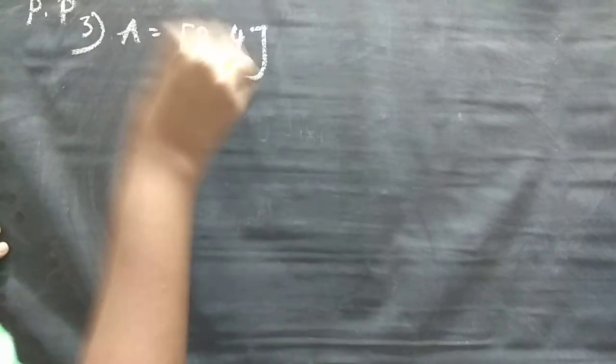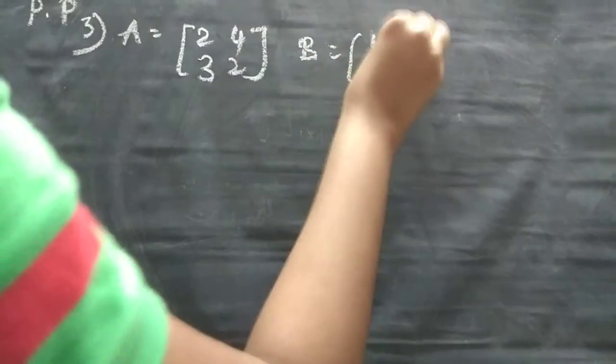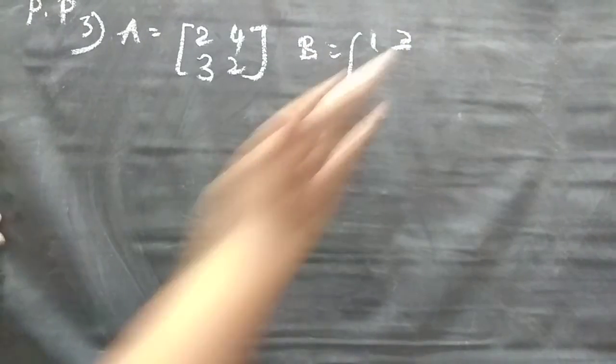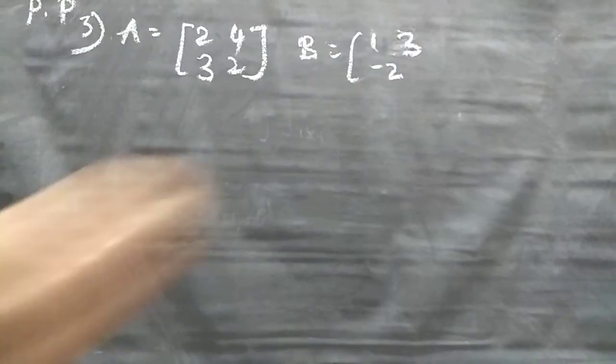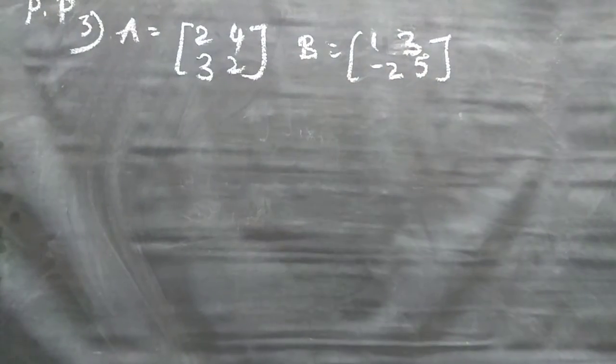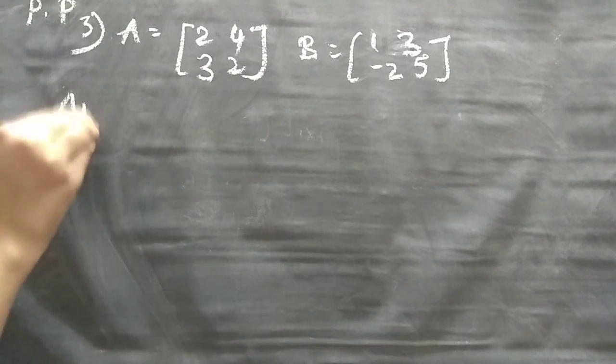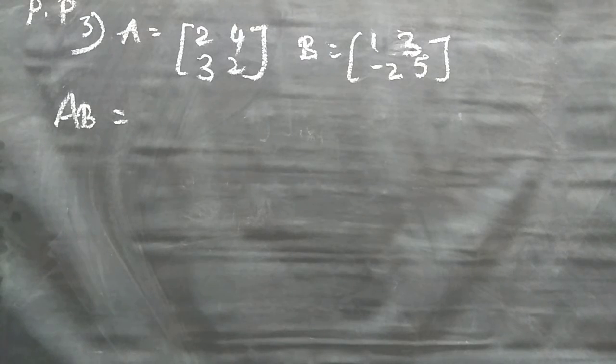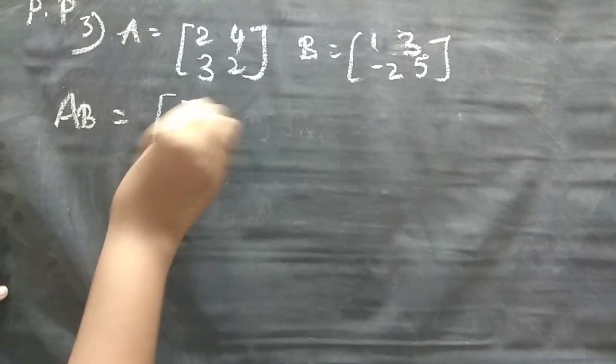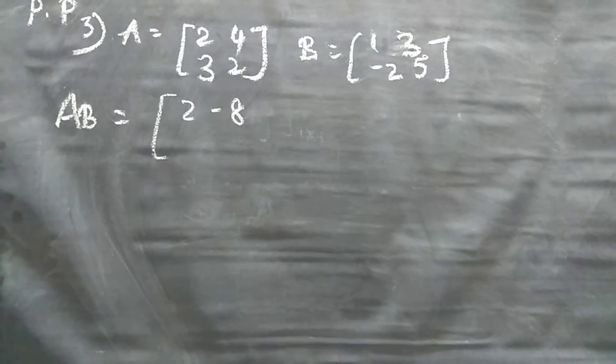Now we will see the third one. Third question we will start. So A value they gave it as [2, 4, 3, 2]. And they gave B value as [1, 3, -2, 5]. Then we have to find AB same thing. So I am not writing repeatedly. So multiply it with this. Steps I already explained, right. So see that.